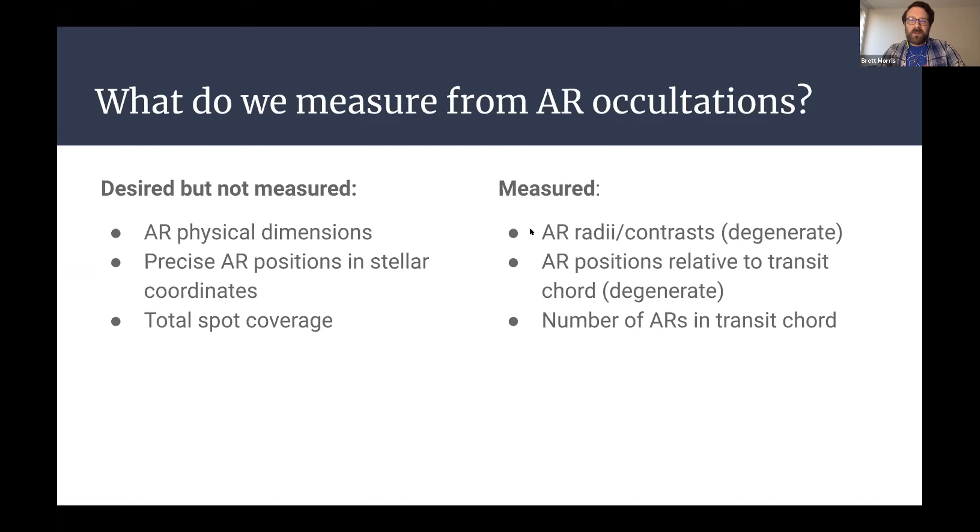In reality, what we can measure more often is the active region radius and contrast. These two quantities are often degenerate, as we saw in Maria's talk earlier. We often measure the active region positions, but they are relative to the transit chord and our understanding of the position of the transit chord on the stellar surface has to come from auxiliary observations like Rossiter-McLaughlin observations. And so we really depend on those additional observations to get us the answer. And then the number of active regions in the transit chord is accessible, as Maria showed, but it's quite difficult to know for certain what the total spot coverage is on the star because we're only occulting a small region of it.